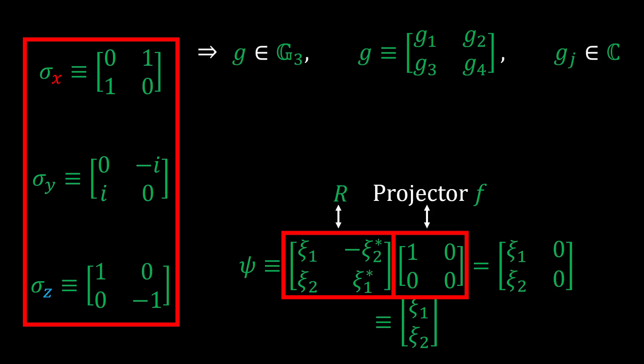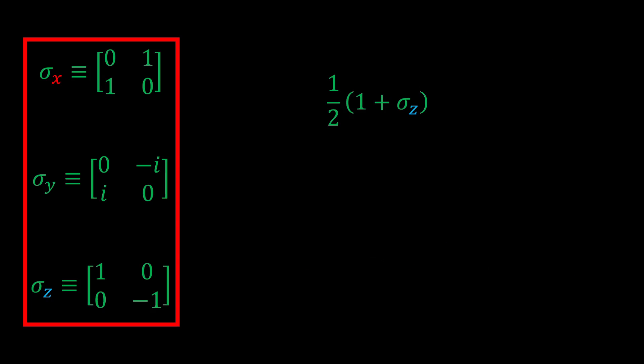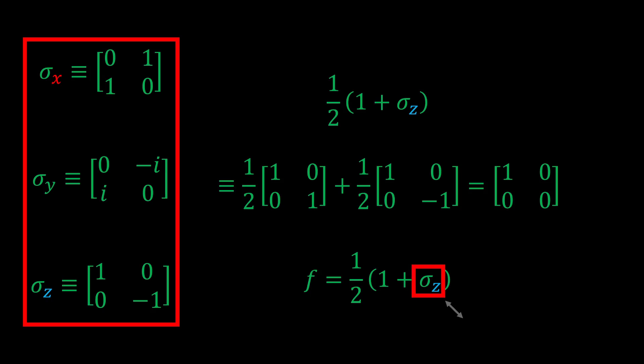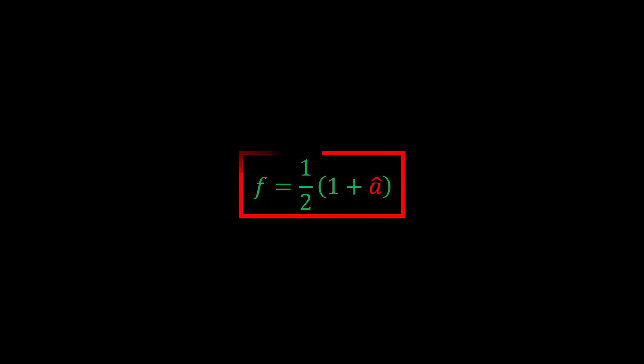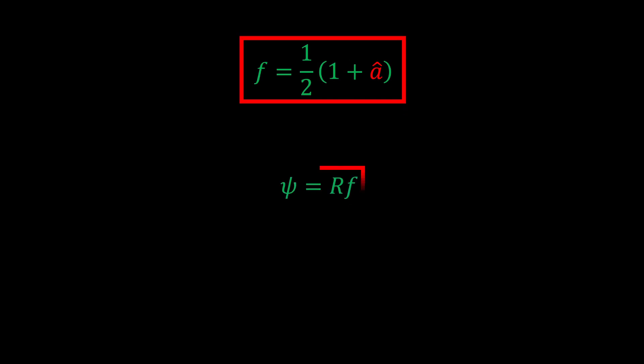But, in the APS, we can use this to find the form of such a projector. Suppose that we were to add 1 and sigma z and then divide by 2. What would we get when we look at the matrix representation? We get exactly the projector. Thus, for a spin axis equal to the z axis, the projector F has the algebraic form of 1 half 1 plus sigma z. So, for a general spin axis A, the projector that projects onto a minimal left ideal is 1 half 1 plus A.